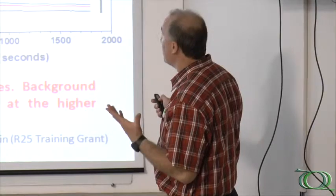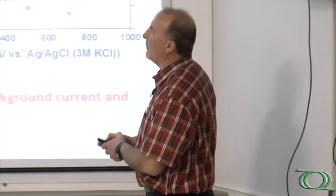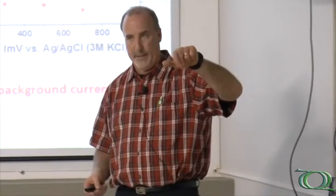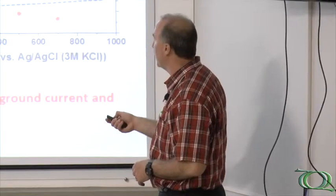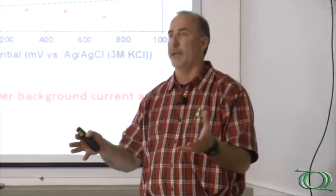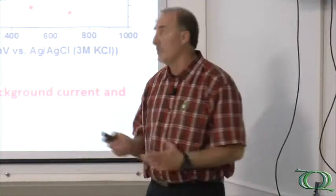The current increases with potential as expected. Looking at the background current at the end of the detection period as a function of potential: the red dots are for the TAC electrode, the black dots for diamond. At all potentials, particularly at high potentials, the TAC materials have background currents that are two to three times lower for the same area. The noise — the standard deviation about the background current — is basically constant at about one nanoamp for all potentials for the TAC electrode, about five times lower than diamond. So without doing anything special to the electrode, we automatically have a five-times improvement in the signal-to-noise ratio, meaning detection limits can go down by a factor of five.